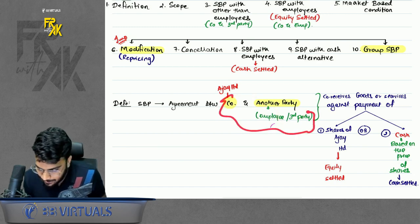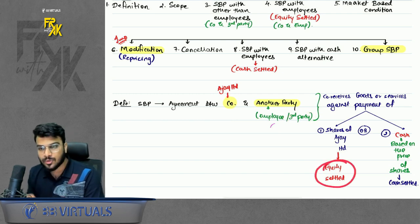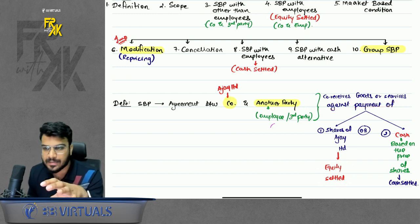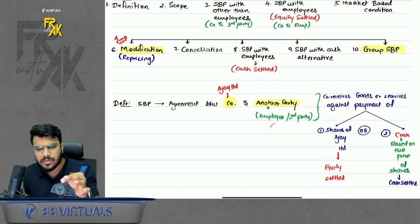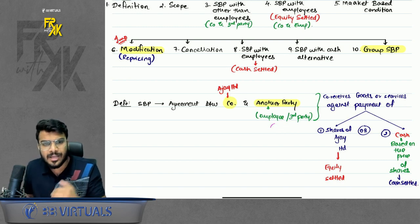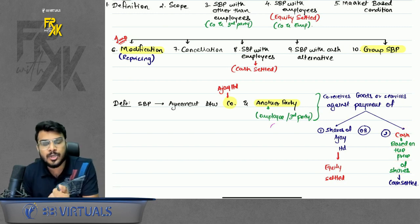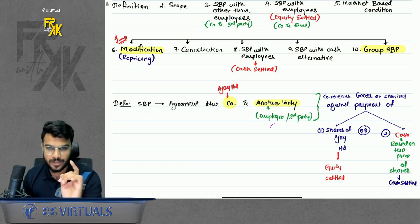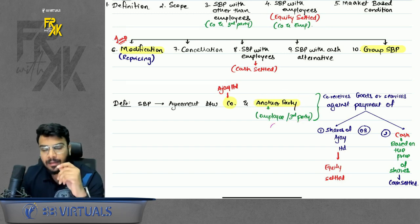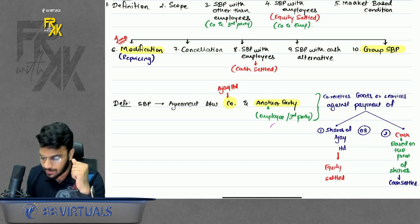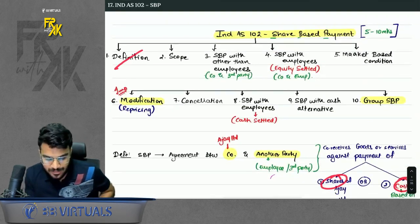Share based payment can be of two types. One is equity settled — the company receives goods and services and gives shares. The other is cash settled — the company receives goods and services but gives cash, and the amount of cash is based on the price of shares. The company can enter into this arrangement with employees or any other party.